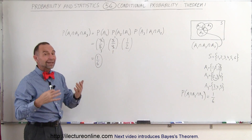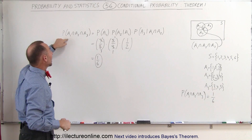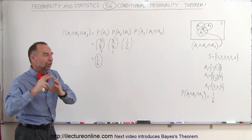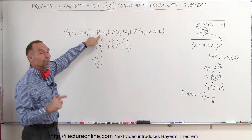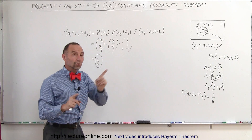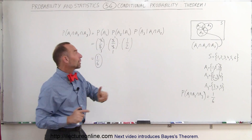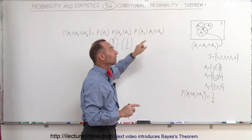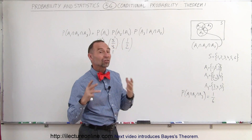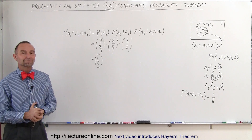Now we can go ahead and apply this theorem. Whenever there are three events A1, A2, and A3, the probability of the intersection of all three equals the probability of the first occurring, times the probability of the second occurring given the first has occurred, times the probability of the third occurring given the intersection of the first and second has occurred. That is Theorem 1 for conditional probability.